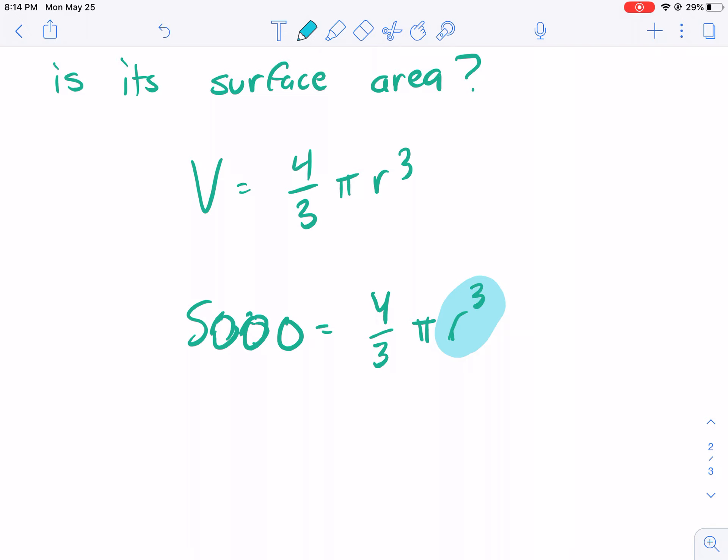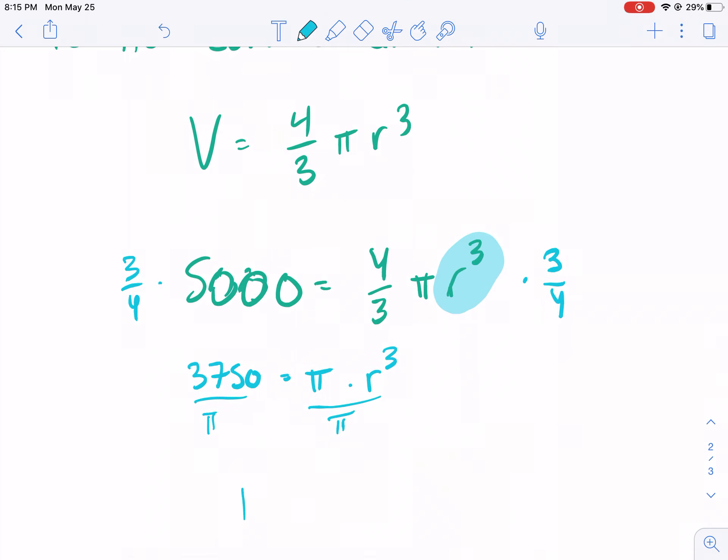First thing I would do is I would multiply both sides by the reciprocal of four over three, which is three over four. And, technically, you'd include the pi in there, but I want to make this easy for everyone. So, I'm just going to leave the pi out of it for now. So, I have 5,000 times three divided by four. And, I get 3750 equals pi times my radius cubed. So, I'm going to go ahead and put this in decimal form. So, I'm going to divide both sides by pi now. So, I divide this by pi. And, I get 1193.66 equals r cubed.